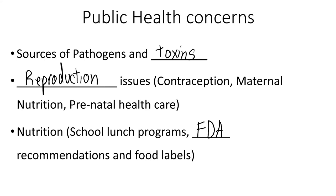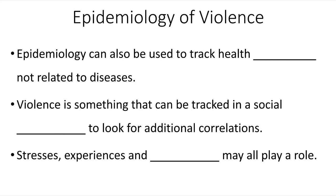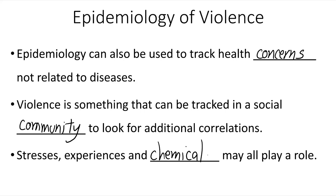Epidemics aren't only related to pathogens. There's also epidemiology of violence. Epidemiology can be used to track health concerns not related to diseases — violence is something that can be tracked in a social community to look for additional correlations and trends. Stresses, experiences, and chemicals may all play a role in looking at societal-level violence.